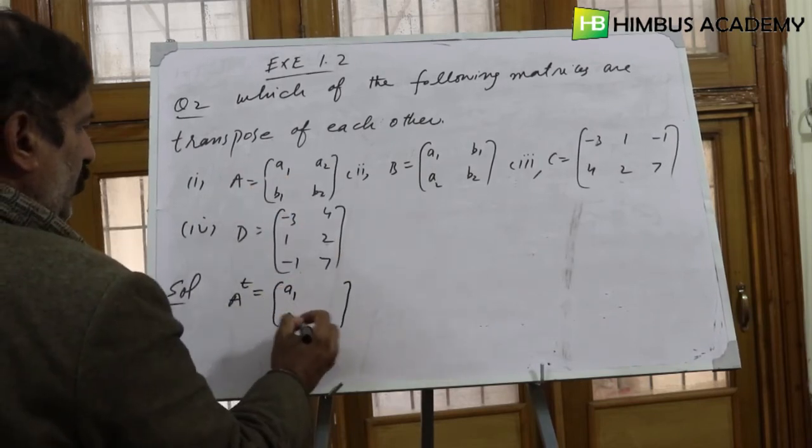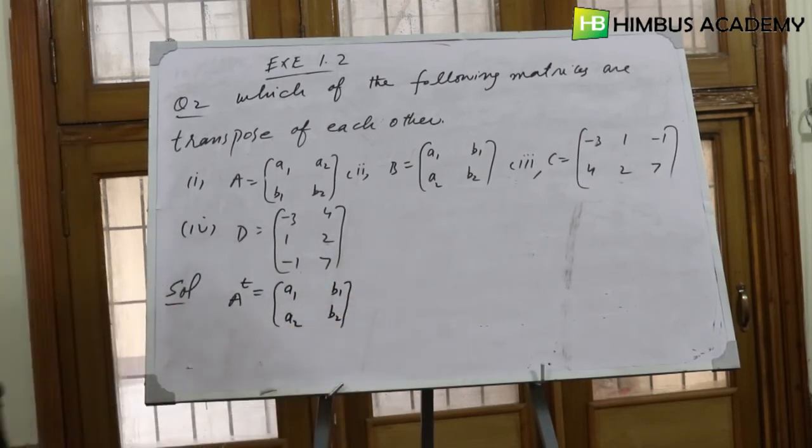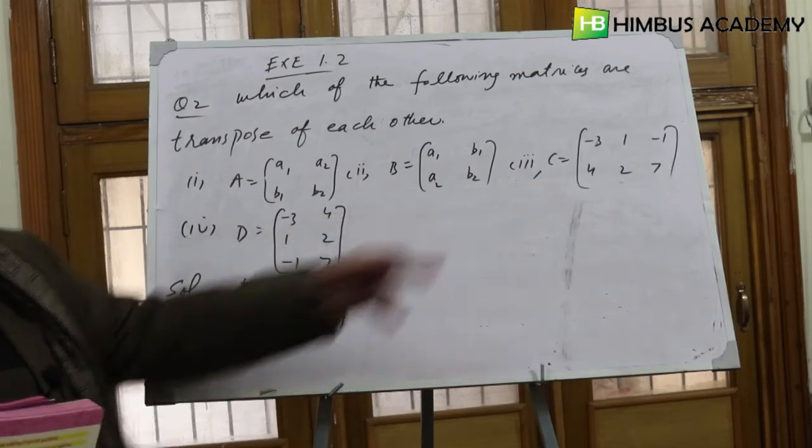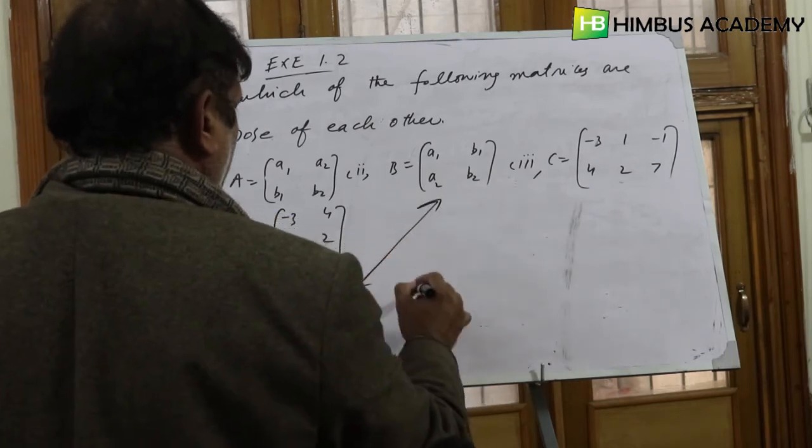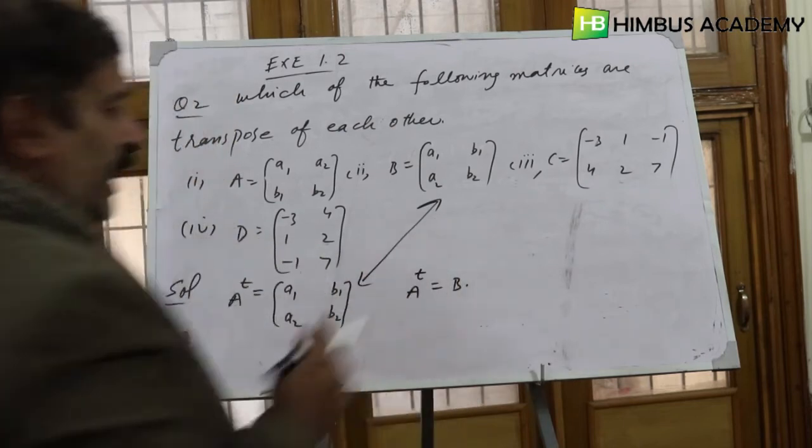If you look at this A transpose matrix and look at matrix B, these two are the same. So from A transpose we get B. A transpose equals B.